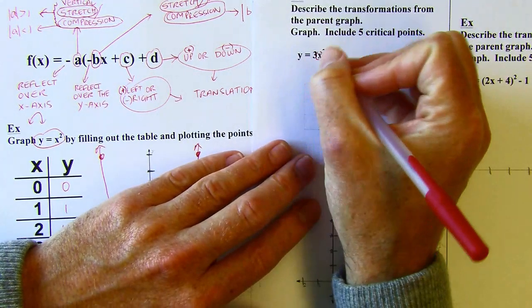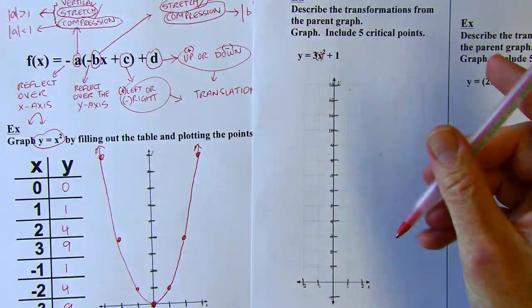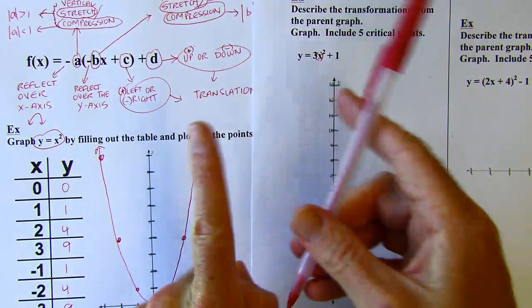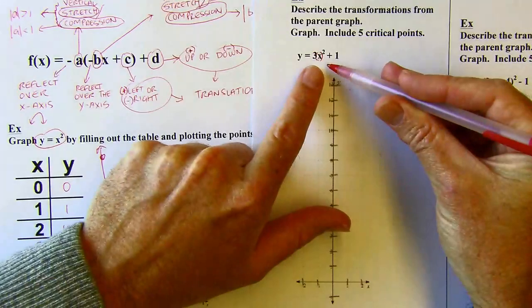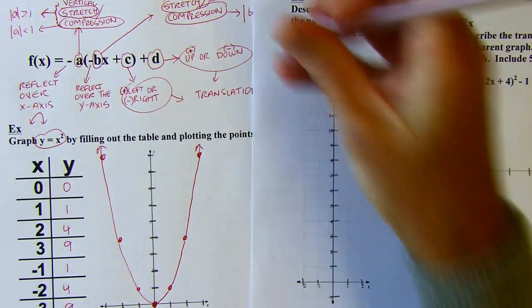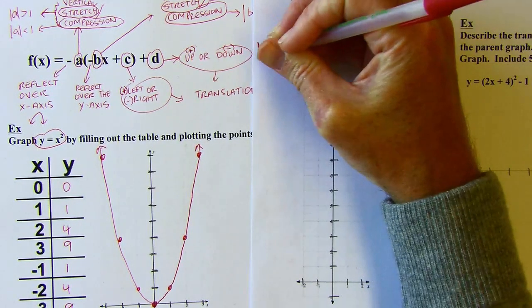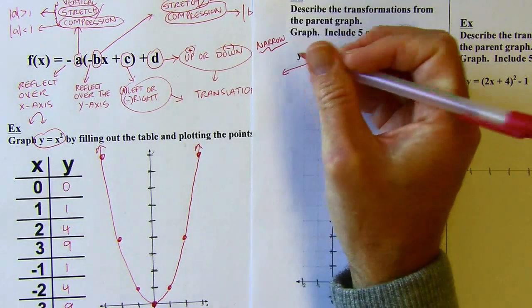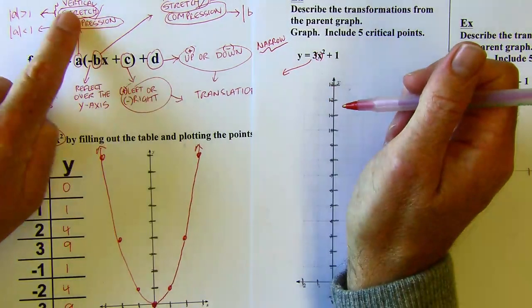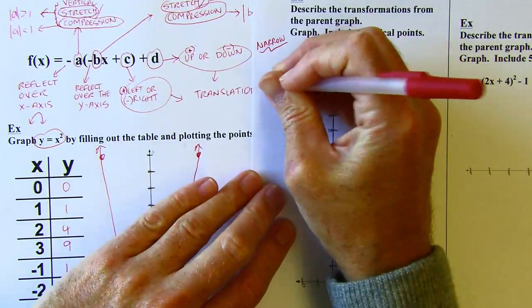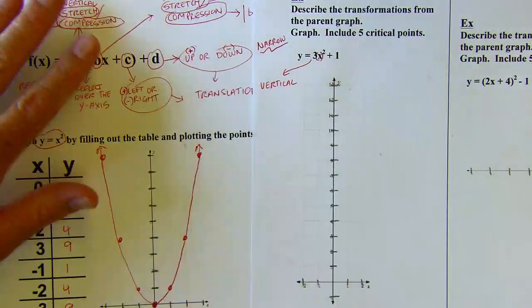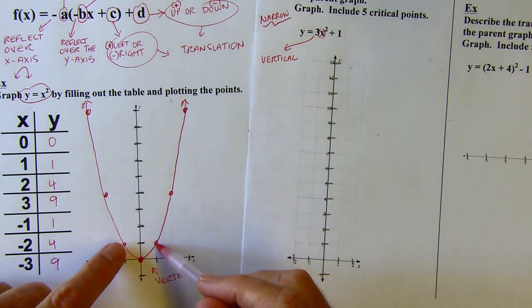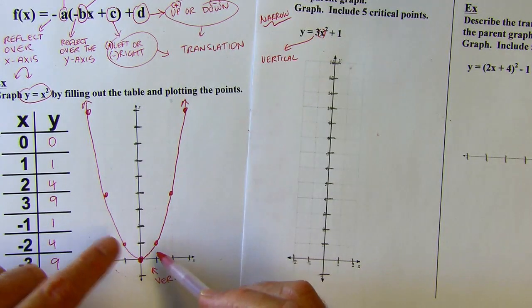Since the coefficient is more than one, the parabola is going to be narrower than the parent graph. The three is on the outside, so this is a vertical change — the vertex stays put, but those points are going to move up or down. If those points moved down while keeping the vertex in place, the parabola would end up wider, but we know it should be narrower. So the points must move up.